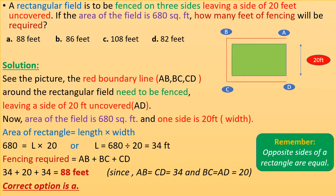Since opposite sides of a rectangle are equal, AB equals CD equals 34, and BC equals 20. Substituting: 34 plus 20 plus 34 equals 88 feet. So 88 feet of fencing is required. The correct option is A.